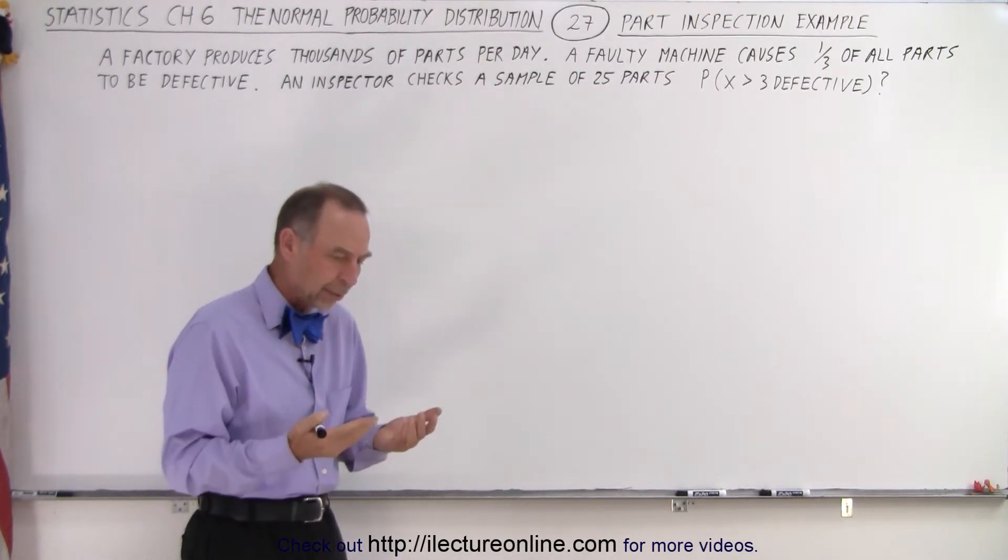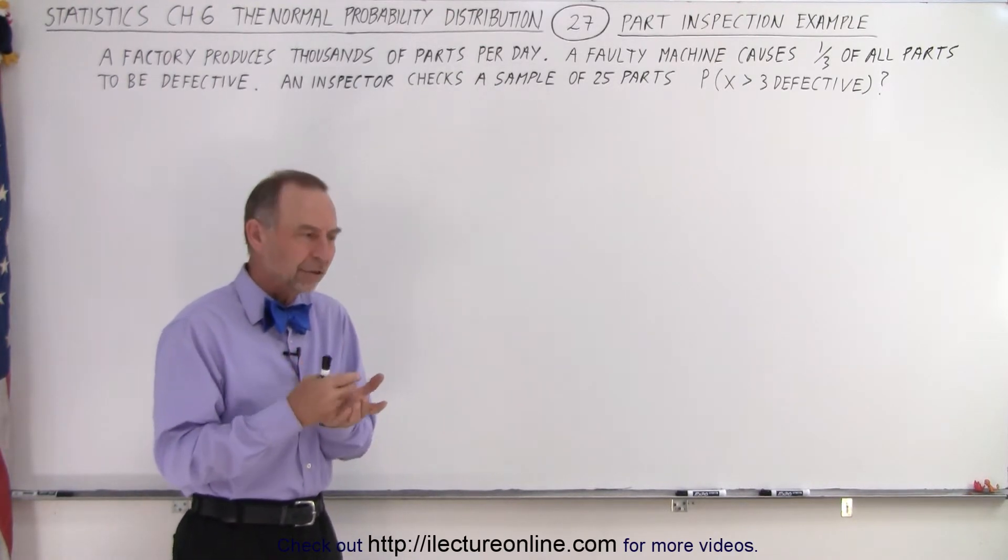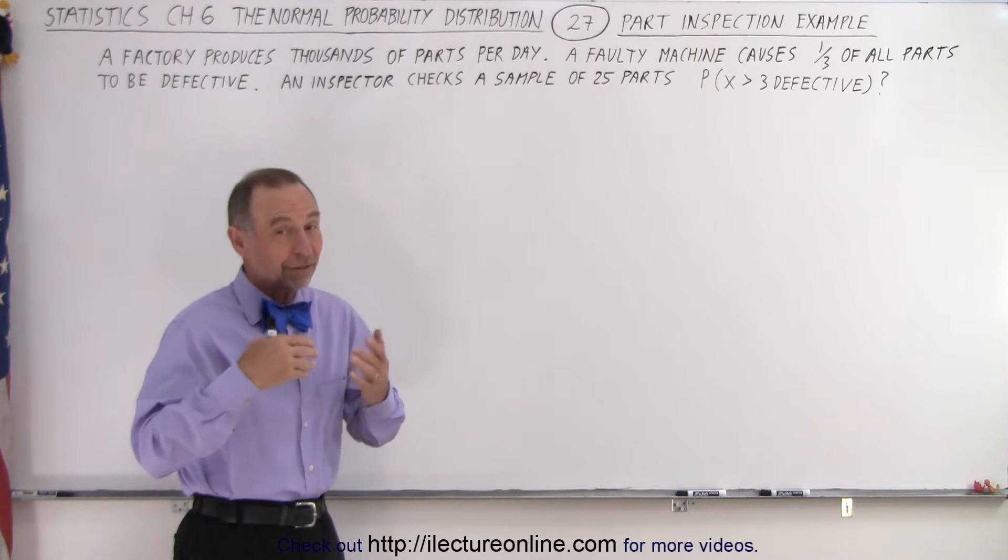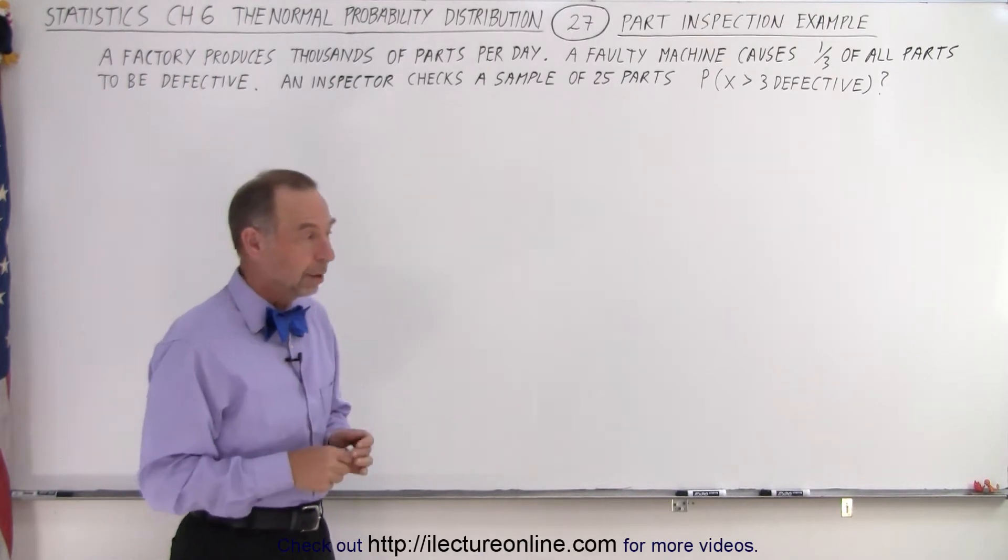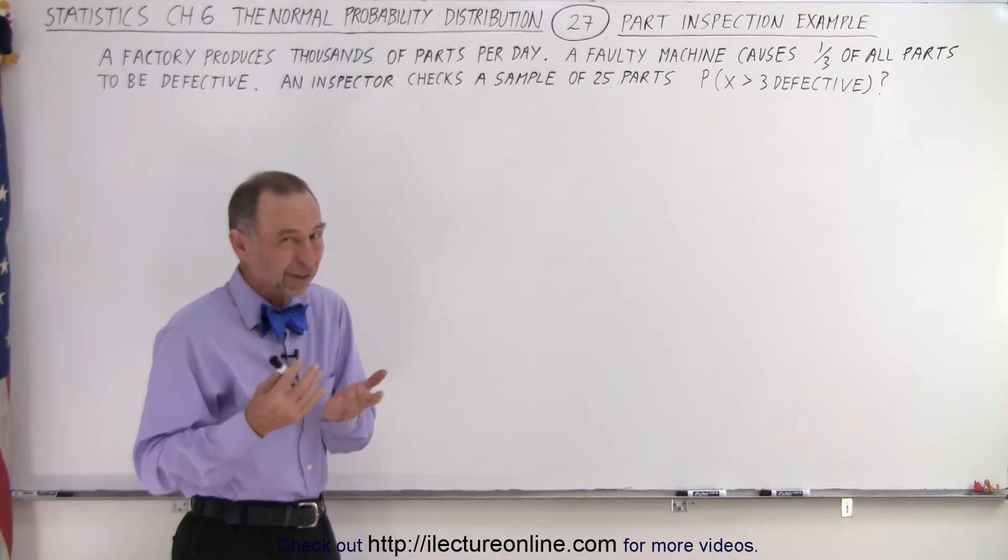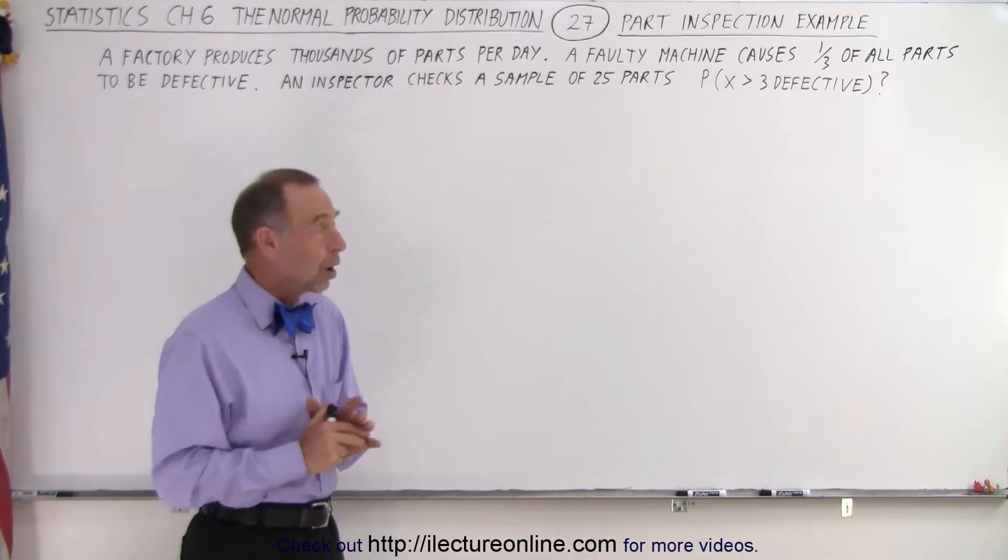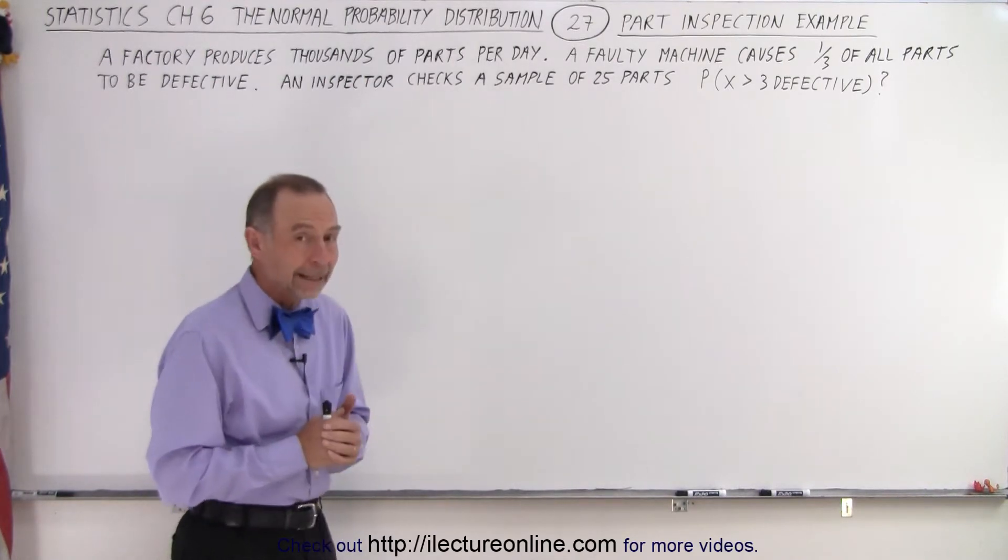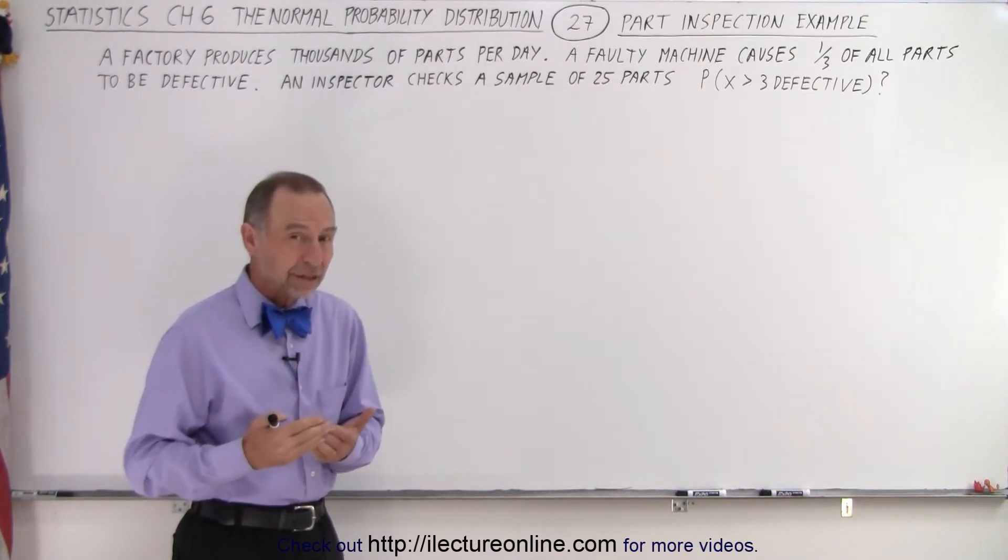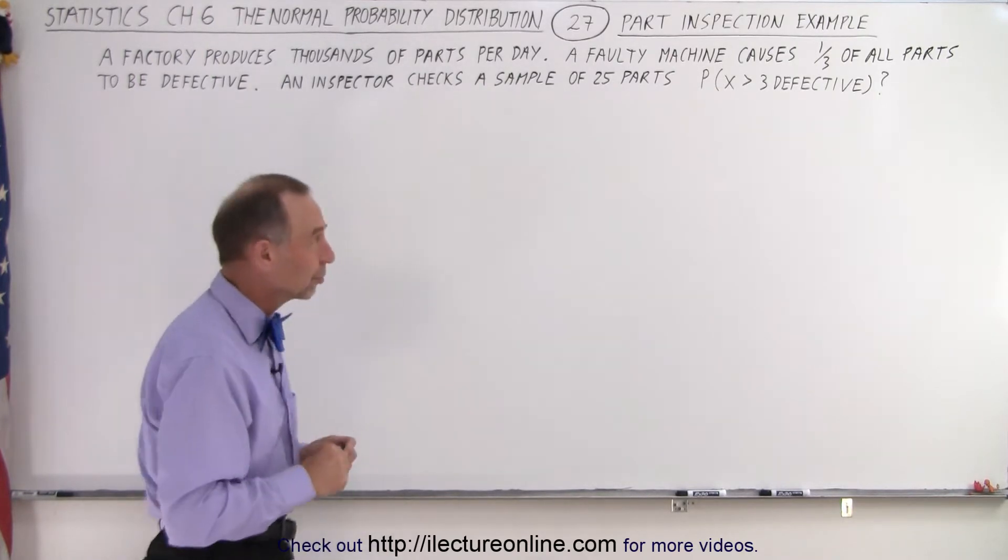So one way to look at it would be, sometimes you may decide how big should my sample be so that I have a reasonable chance of figuring out that something is wrong. Because let's say you check 25 parts and one is defective, what does that really mean? But if three are defective out of 25, that means there's probably something wrong. So what is the probability that more than three will be defective if one-third of all the parts produced are defective because of this faulty machine?